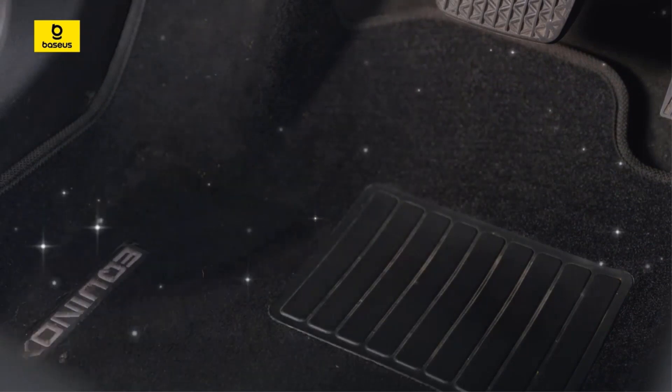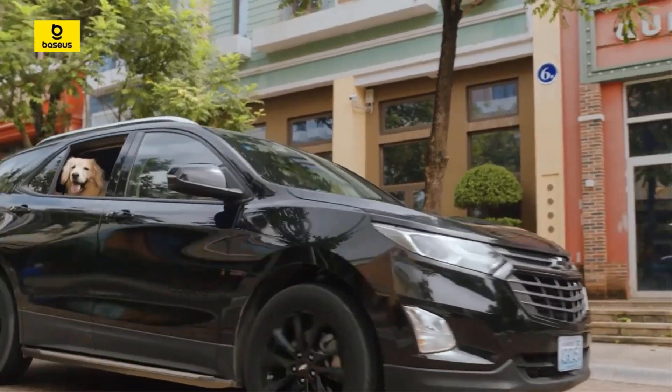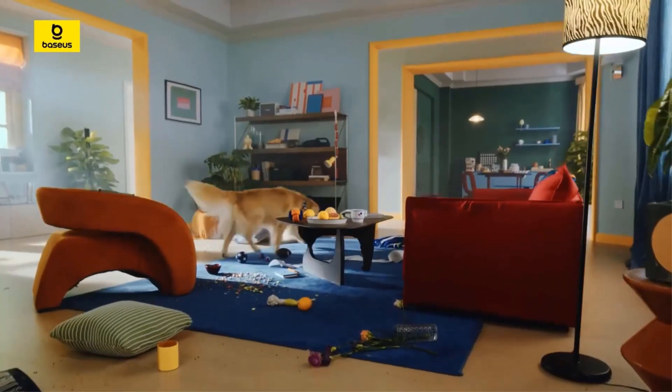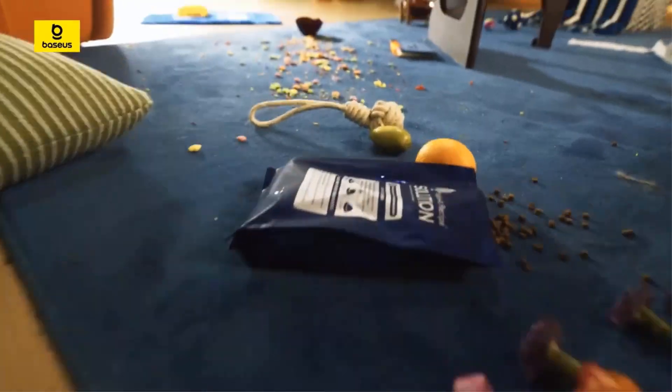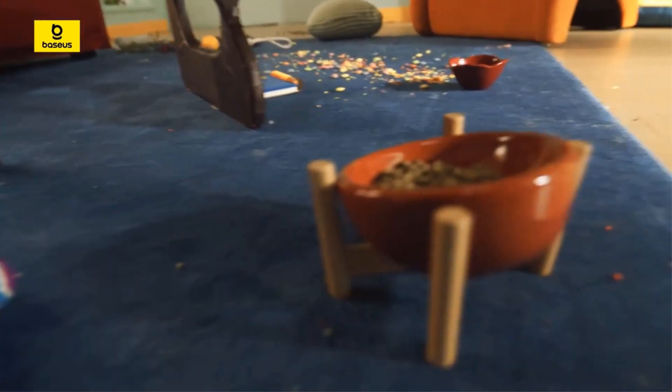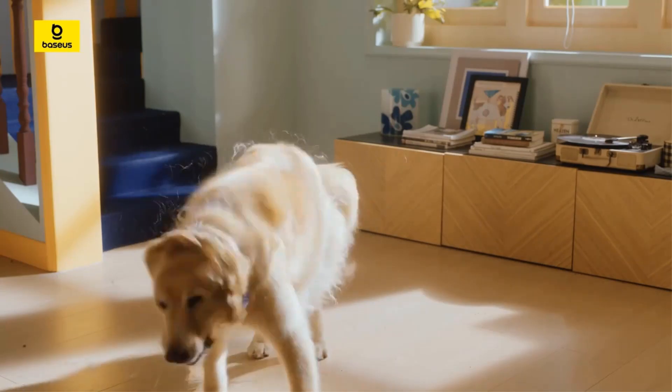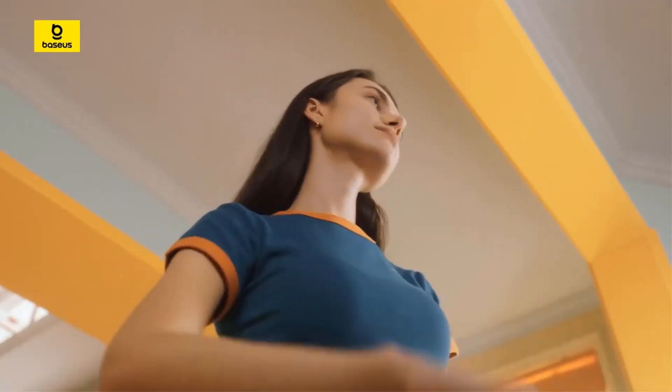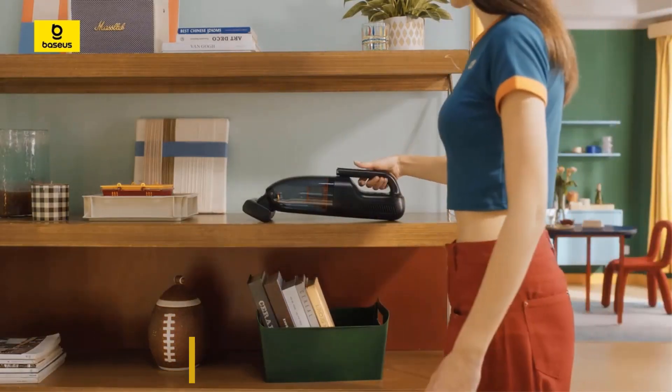The rubber roller brush does not tangle hair while bristle brush does. A good choice of household handheld vacuum cleaner, more portable and lighter for cleaning car seat seams, floor mats, and sofa seams.